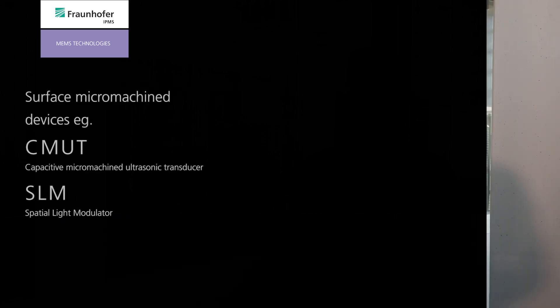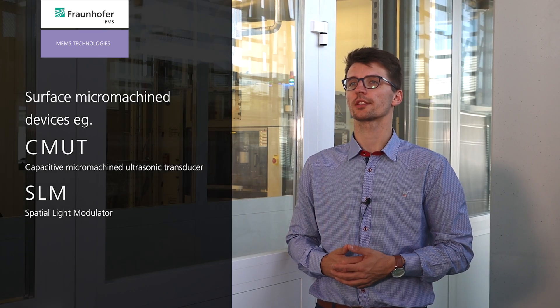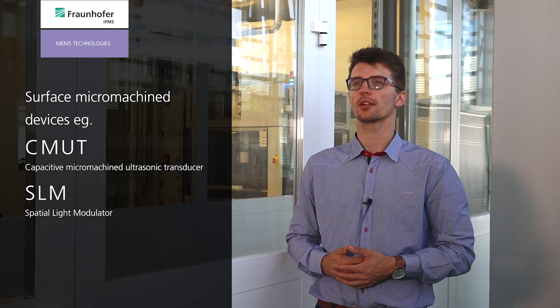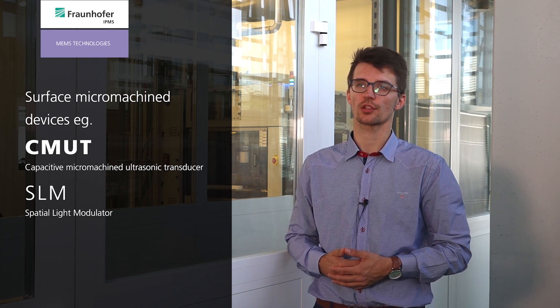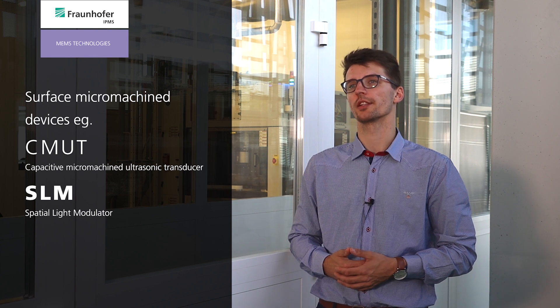The surface micromachined devices we provide include CMUTs (capacitive micromachined ultrasonic transducers) and spatial light modulators. To build those devices, we use CVDs, PVDs, LADs, and a 5-zone CMP because we have high requirements for our top-level oxides to get high-performance devices done.